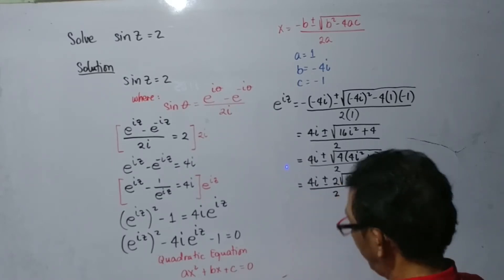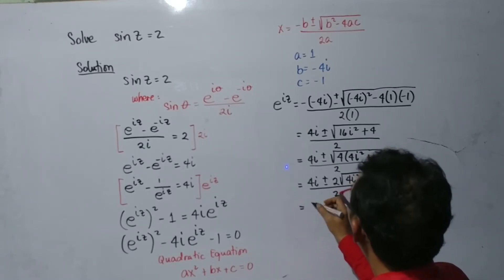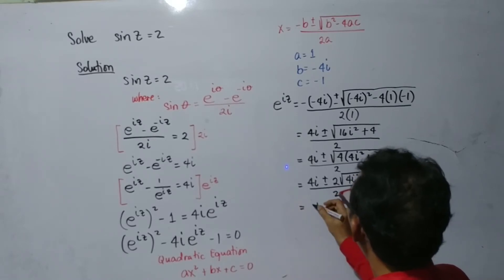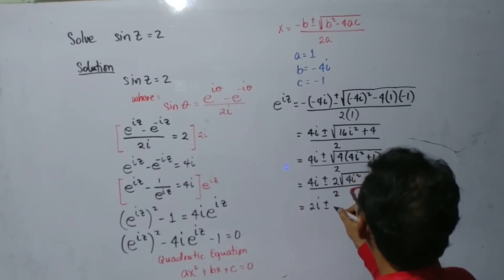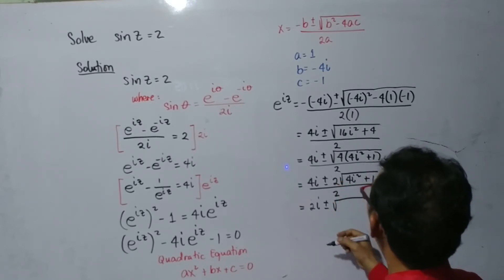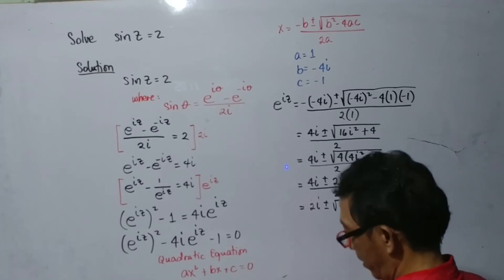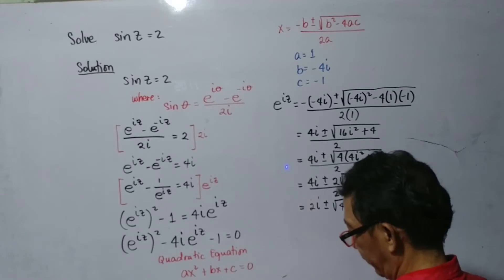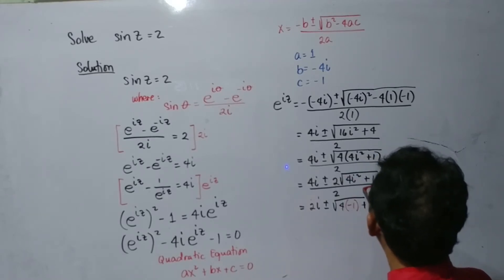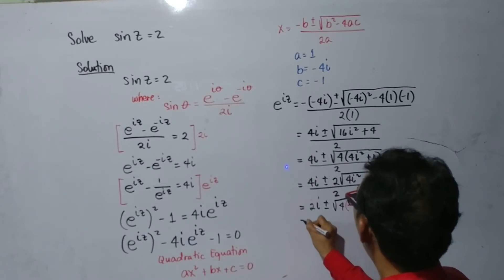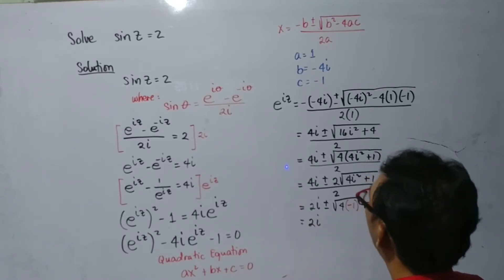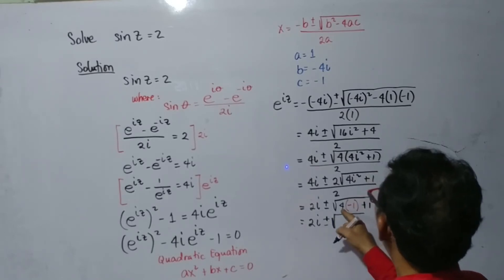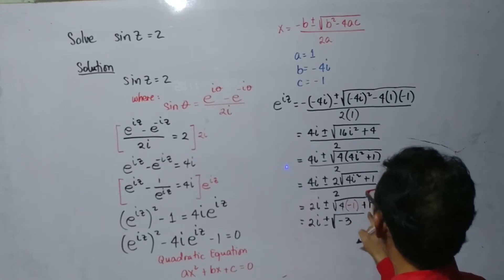We can substitute i squared equals negative 1. So we have 2i plus or minus the square root of 4 times negative 1 plus 1, which gives 2i plus or minus the square root of negative 4 plus 1, which is negative 3.